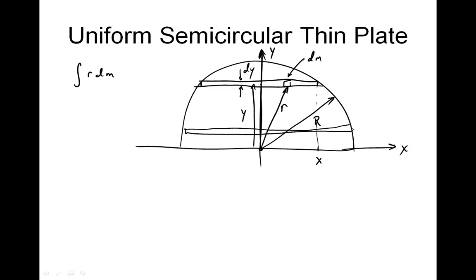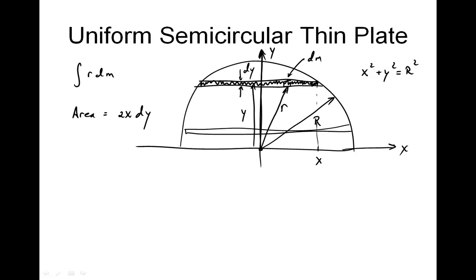But that x value is going to depend on where I'm at. Clearly if I'm down here, my x value — the length of that little thin area — is going to be larger than it is here. Well, that comes from x² + y² = r². And so from left to right, this piece is going to have a length of 2x. So the area is going to equal 2x times the height dy. But x equals √(r² − y²). And so this area — a tiny area, we're going to call it dA — is 2√(r² − y²) dy.